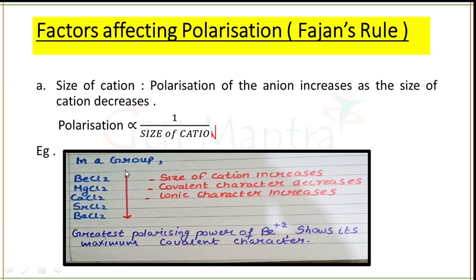As you move from top to bottom in the group, the size of the cation increases — Be, Mg, Ca, Sr, Ba — size increases along this series. If the size increases, the covalent character will decrease and the ionic character will increase.